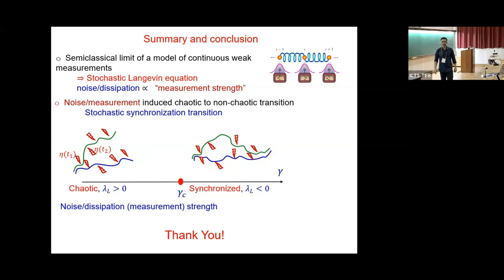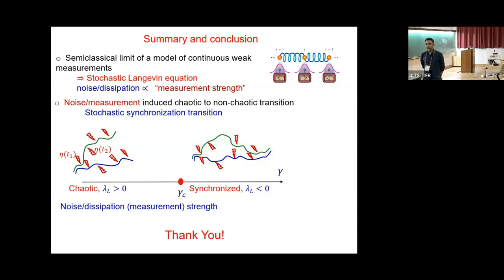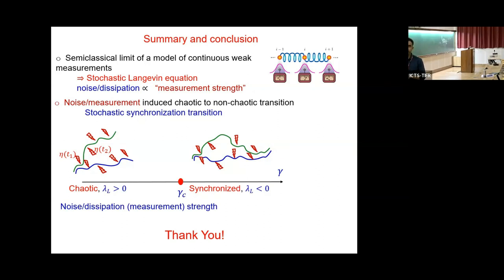A clarification question: if you use a cosine interaction potential, would you get the standard Kuramoto model? There is an extra process here — the measurement process. You have a Hamiltonian, so you could in principle put the Kuramoto model in place of the quartic interaction, but this would be different from phase synchronization. The stochastic synchronization I am discussing is not phase synchronization, which is what Kuramoto describes.